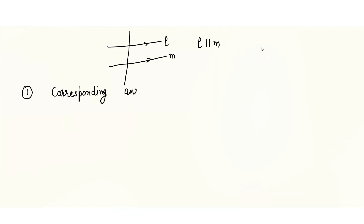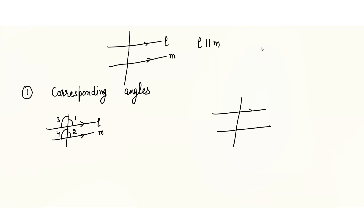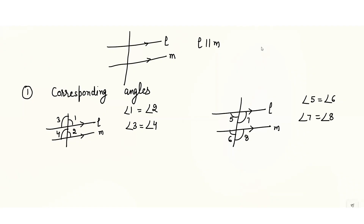In corresponding angles, the corresponding angles are always equal. So if I represent a diagram where you have two parallel lines, angle 1 is corresponding to angle 2, and angle 3 is corresponding to angle 4. Similarly, if L and M are parallel to each other, angle 5 corresponds to angle 6, and angle 7 corresponds to angle 8. That means angle 1 equals angle 2, angle 3 equals angle 4, angle 5 equals angle 6, and angle 7 equals angle 8. If you see the diagram, it looks like one angle is directly below the other.